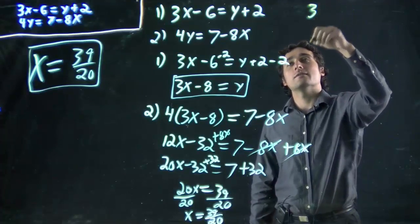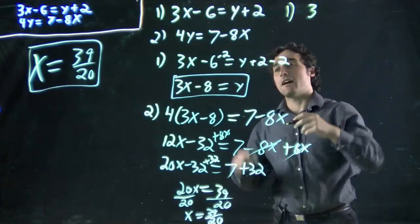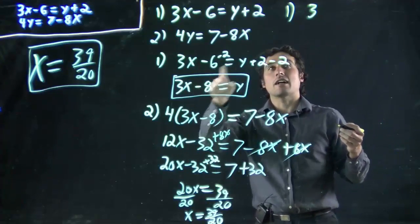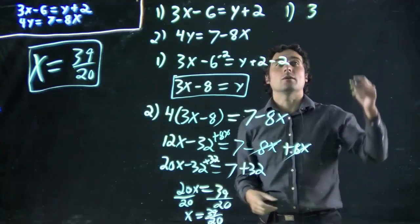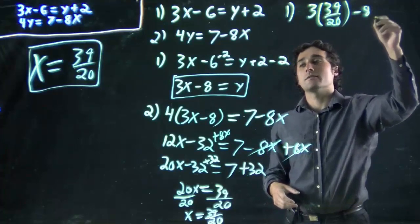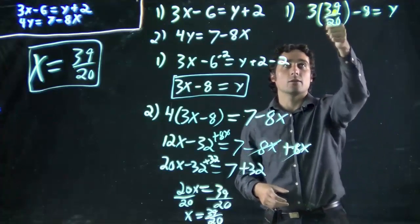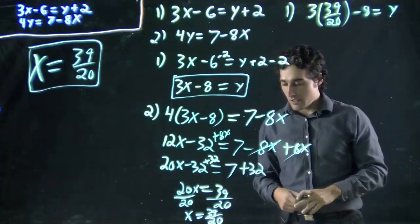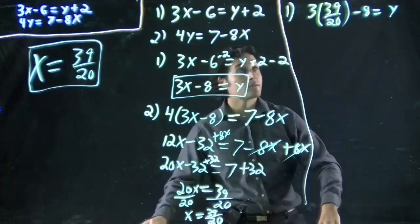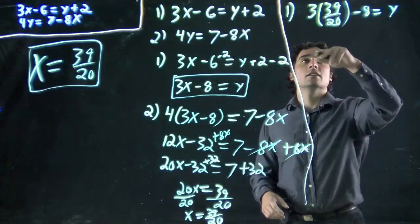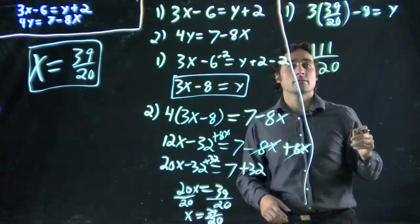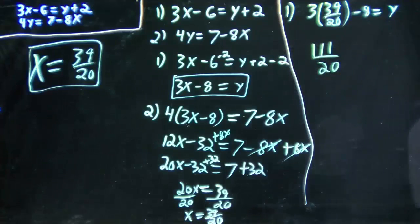I'm basically taking equation 1 here. I've already solved y in terms of these things, so I'm using the simplified version just to save myself some time. I've got 3 times x, well we just saw x is 39 over 20, minus 8, all equals y. I want to multiply that in. 3 times 39, so we've got 117 over 20.